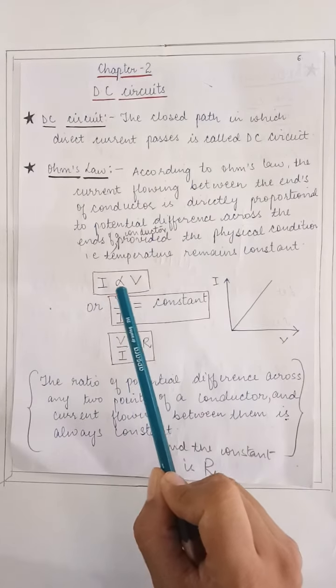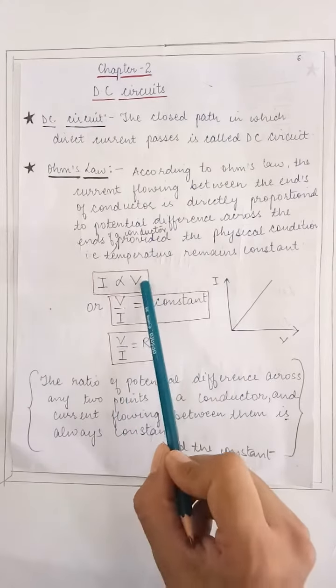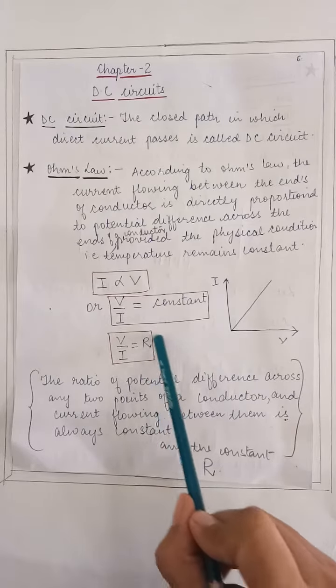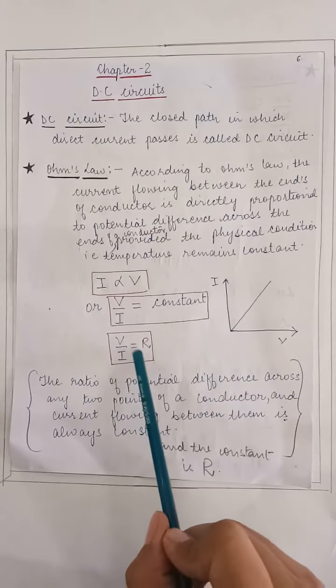Current is directly proportional to voltage. Or we can say V over I is always constant. Here constant, we are taking R, which is resistance. V over I is equal to R.